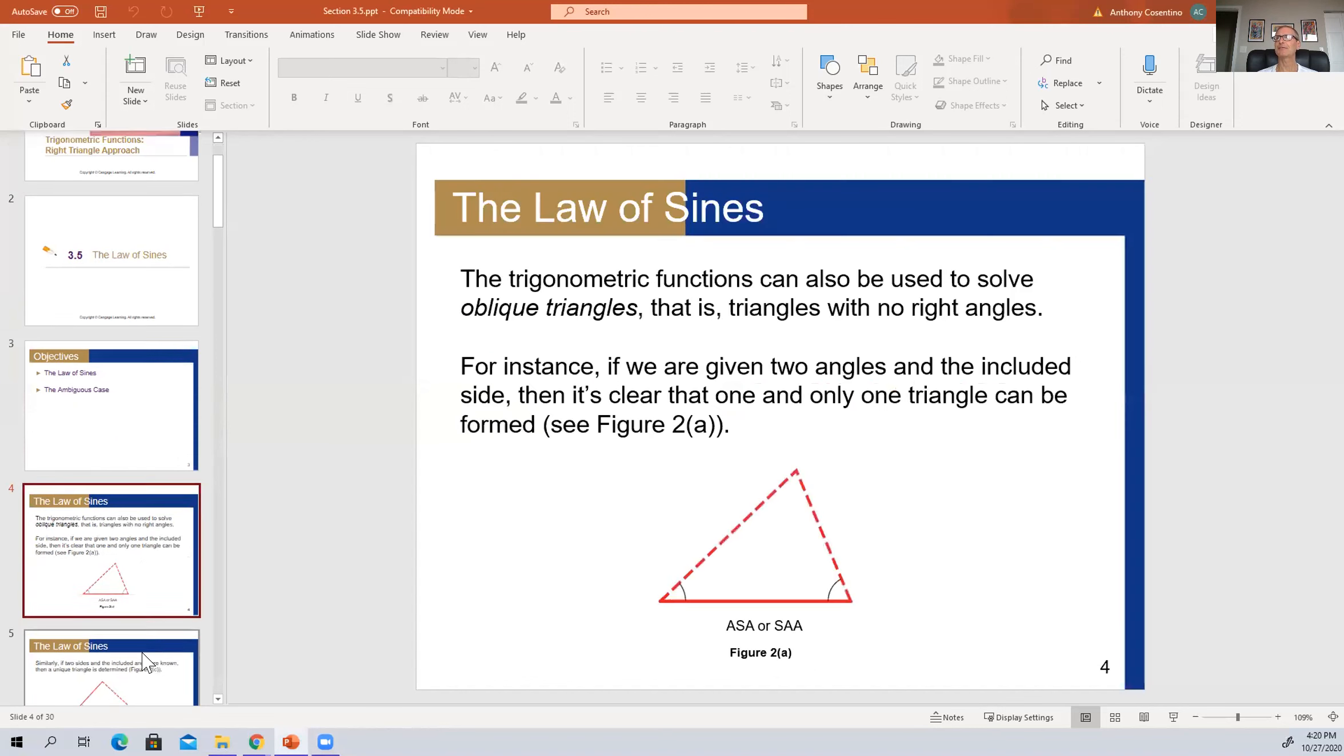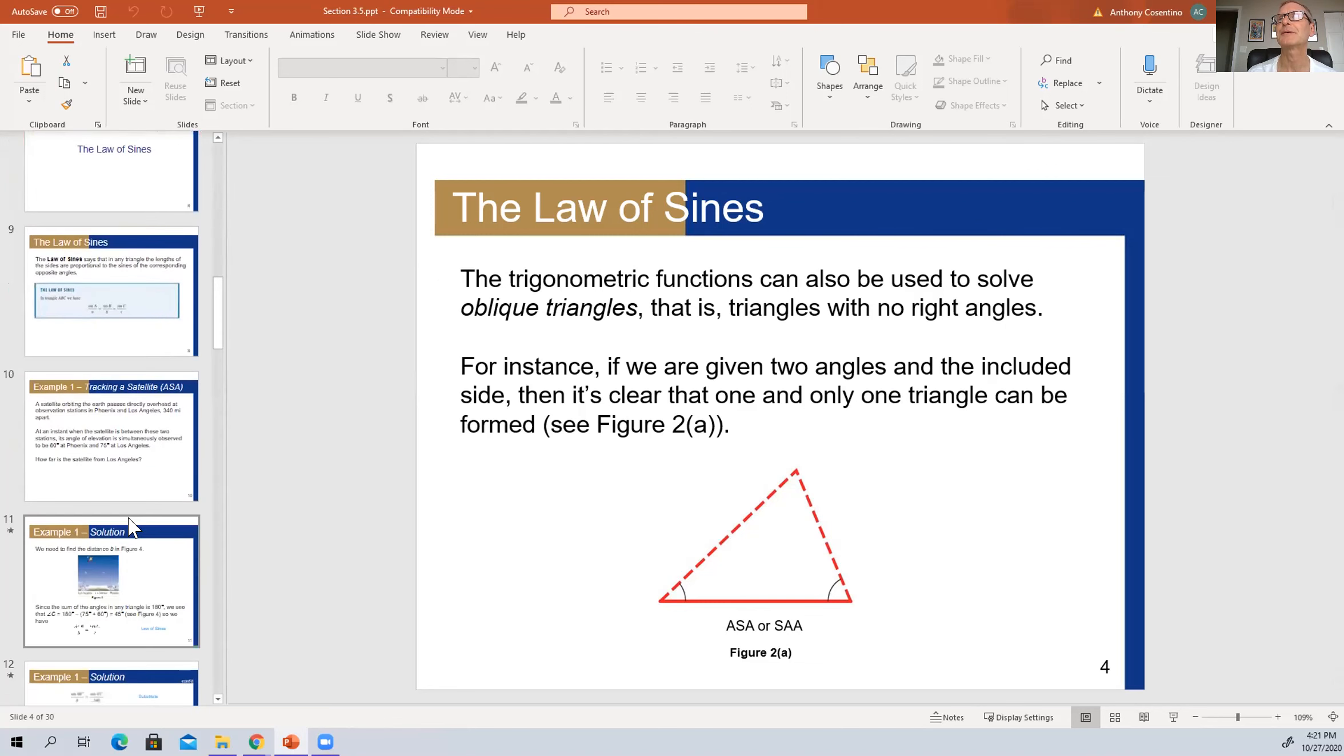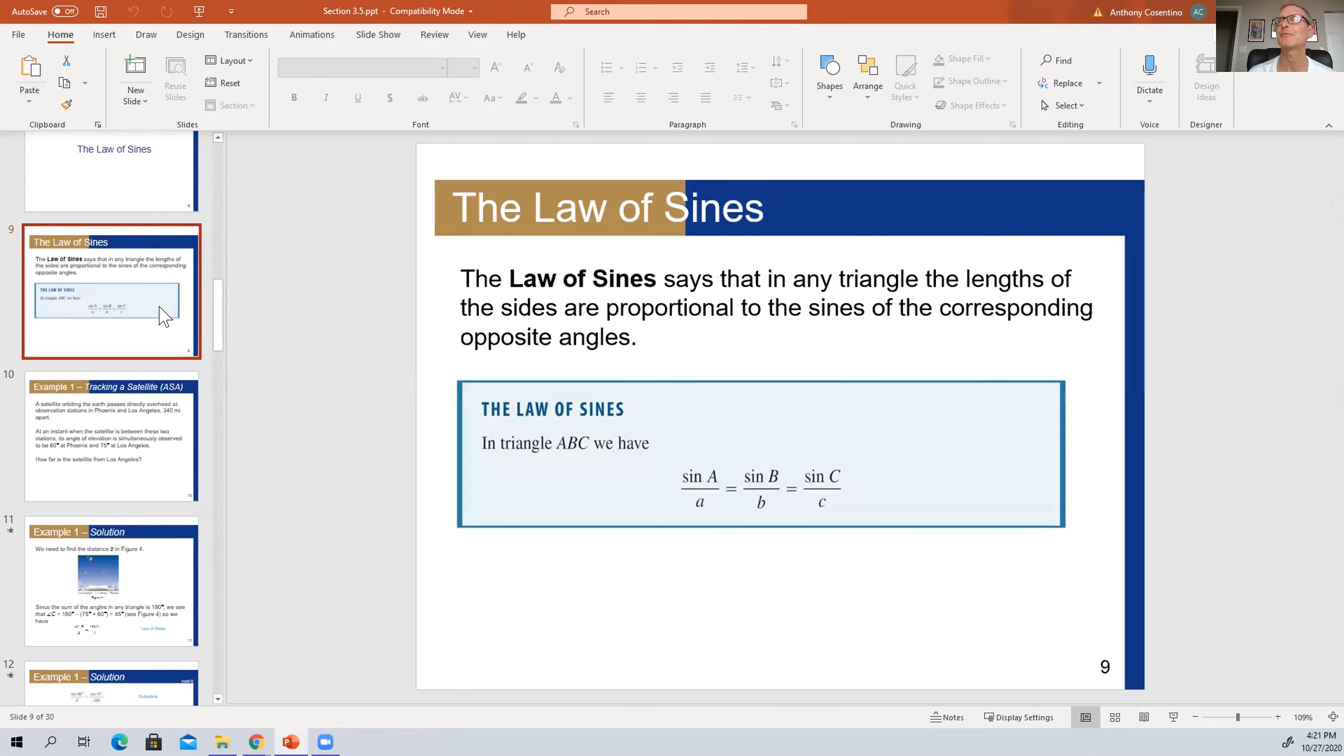There are a couple of cases where the laws of sine work and then there's a couple of cases where the laws of cosine work. And so we're going to start with sines. The first case is this idea where you have two angles of a triangle and the length of one side. So we have been talking about this quite a bit with right triangles, and now we're taking it to the next level where it could be any triangle.